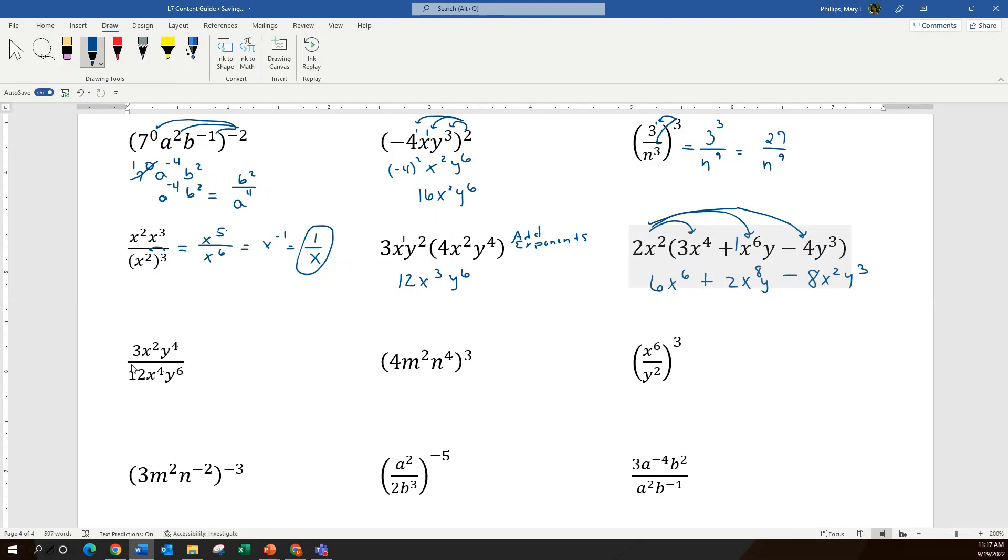The next one has a fraction. So what I want to do is I want to reduce that fraction. I can see that a common factor of 3 could be divided out. If I divide both top and bottom by 3, my fraction becomes 1 over 4. When I look at the x terms, I subtract and I get x to the negative 2.